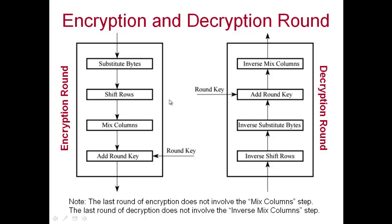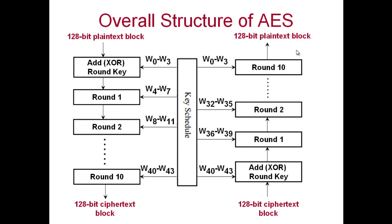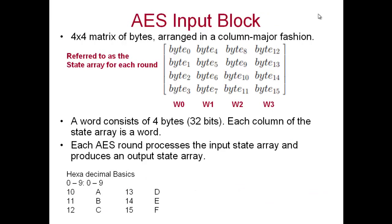For decryption we have equivalent inverse steps: inverse substitute bytes, inverse shift rows, and inverse mixed columns. In the last round of encryption we do not have the mix column step, and for the last round of decryption we do not have the inverse mix column step. When I say last round, it means round 10 for both encryption and decryption.